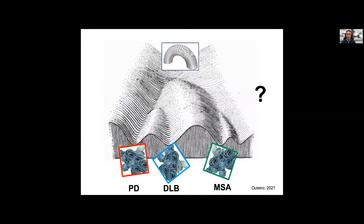Recently, because we know that alpha-synuclein is associated with different synucleinopathies, the idea could be that perhaps there are different modifications that will determine the fate of alpha-synuclein, perhaps leading to the formation of aggregates with slightly different properties that may then explain why this protein may be found in different cell types and in different subcellular locations — and this may be important for pathology.